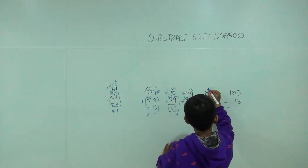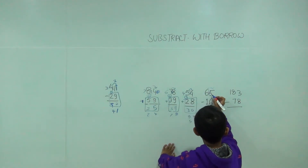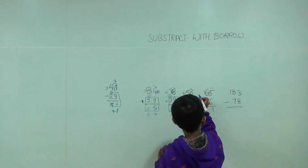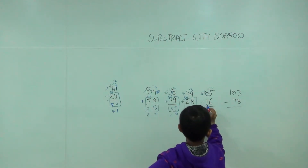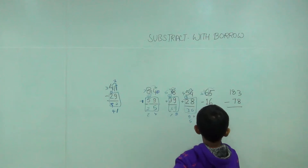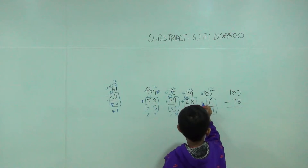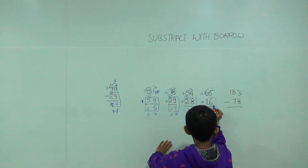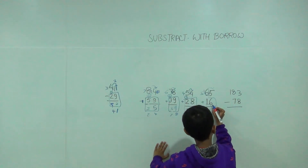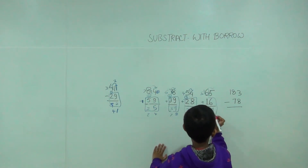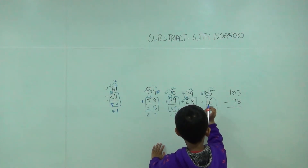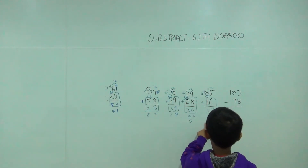We will give 1 here, then it will become 15. 15 minus 6 is equal to 9, and it will become 5, and 5 minus 1 is equal to 4. So the answer would be 49. Let us check: 9 plus 6 is equal to 15, so 5 would be here and 1 would be here. And 1 plus 1 plus 4 is equal to 6. So we have done correct.